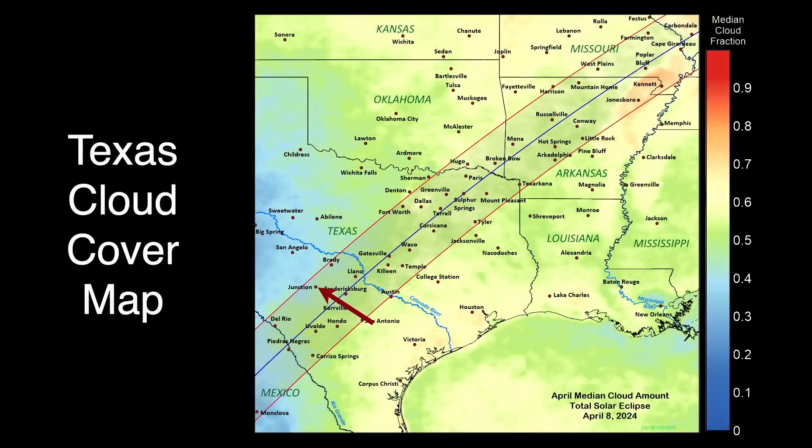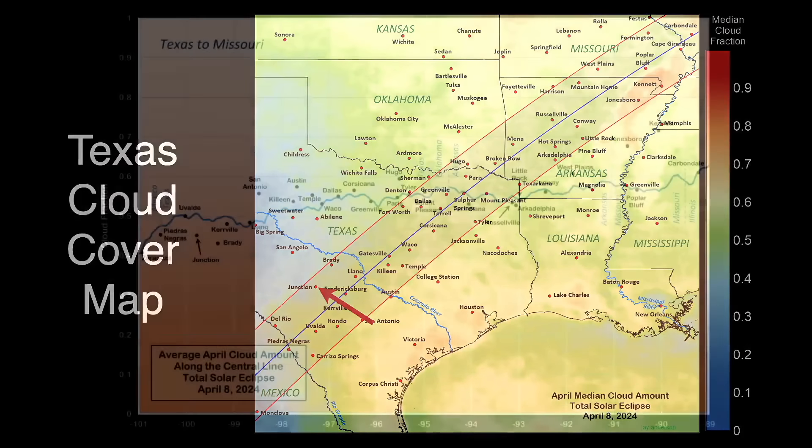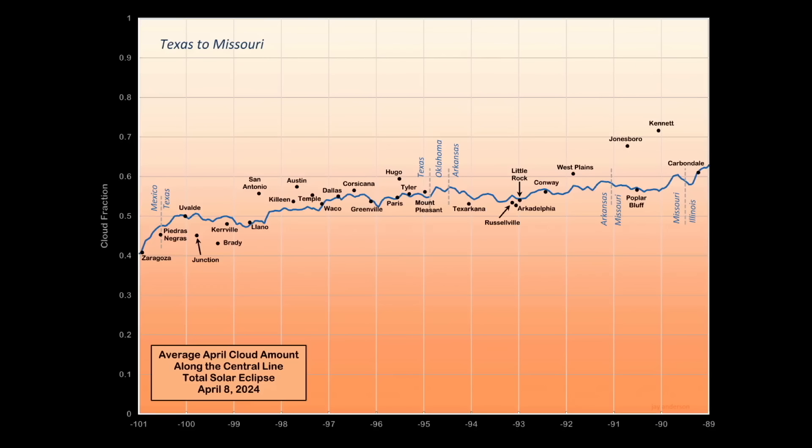Junction, Texas, while being easier for us travel-wise, is a bit dicier weather-wise. It's still better than further along the path of totality. Here's the average cloud cover along the path of totality from Texas to Illinois. Junction is showing about a 45% chance of cloud cover. So, still better than a 50-50 chance of seeing totality. About the best in the U.S.